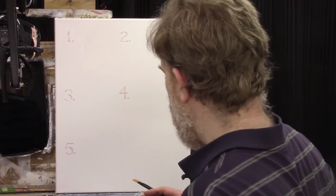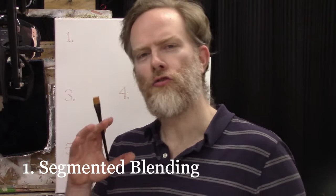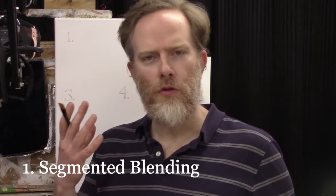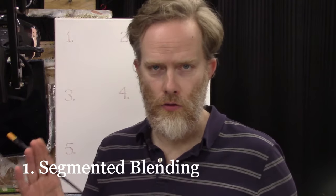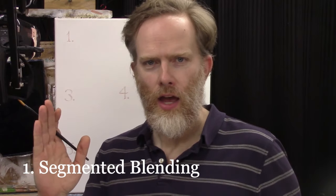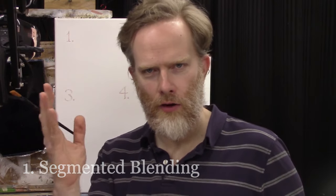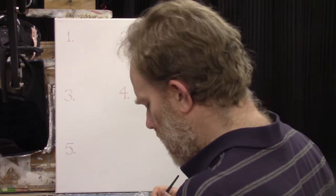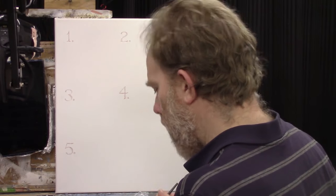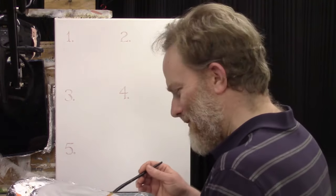So technique number one is called segmented blending. And it's just like how, if you think of ancient temples and you have these fluted pillars and you might have different facades of those pillars, they're flat but they're kind of variegated. And there's a sense of dark to light. That's what we're doing here. We're creating a sense of blending from dark to light or one color to another color.